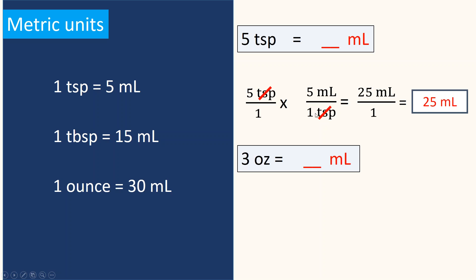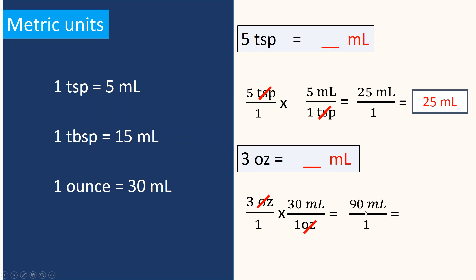Let's take another example: three ounces equals how many milliliters? Set up the dimensional analysis — 3 ounces, with 1 ounce equal to 30 milliliters. Cancel out ounces, then multiply: 3 times 30 milliliters equals 90 milliliters. Multiply the bottom: 1 times 1 equals 1. So 3 ounces equals 90 milliliters.